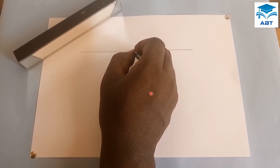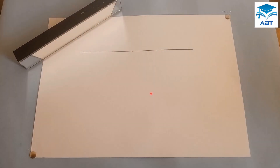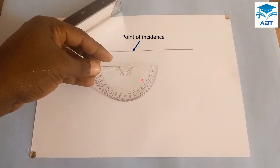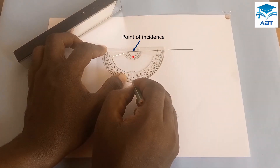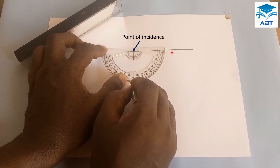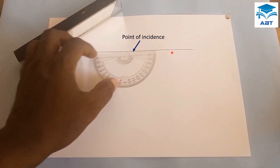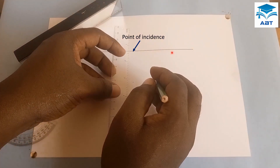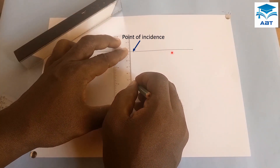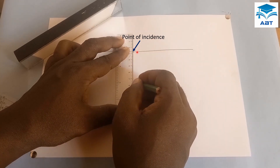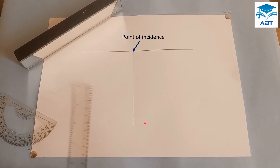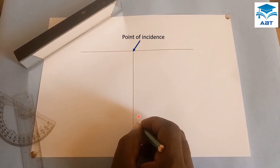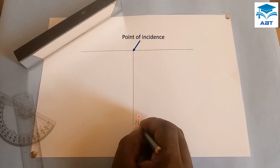We put a point here — this point is known as the point of incidence. And we are going to draw the normal, which is 90 degrees to the mirror line. So we put the baseline of the protractor here, and the point on the point of incidence, and we measure 90 degrees. We then draw a straight line from the point of incidence passing through the 90-degree point. And this line is the normal — it is 90 degrees to the horizontal line.